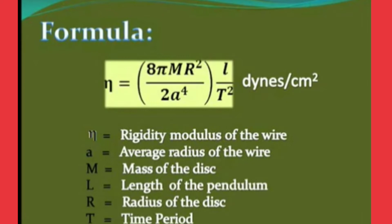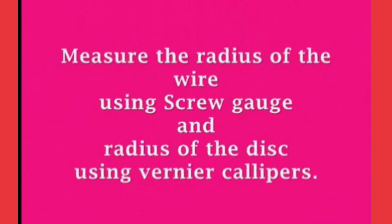In this formula, whatever values we don't know, we need to measure them by using the vernier calipers and also the screw gauge. These are the radius of the wire using screw gauge and radius of the disc using the vernier calipers. First we will calculate the radius of the wire by using the screw gauge.